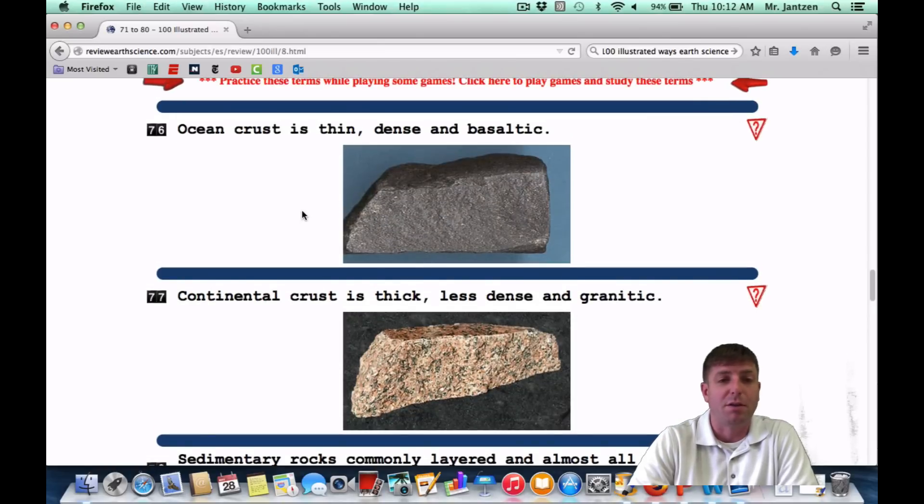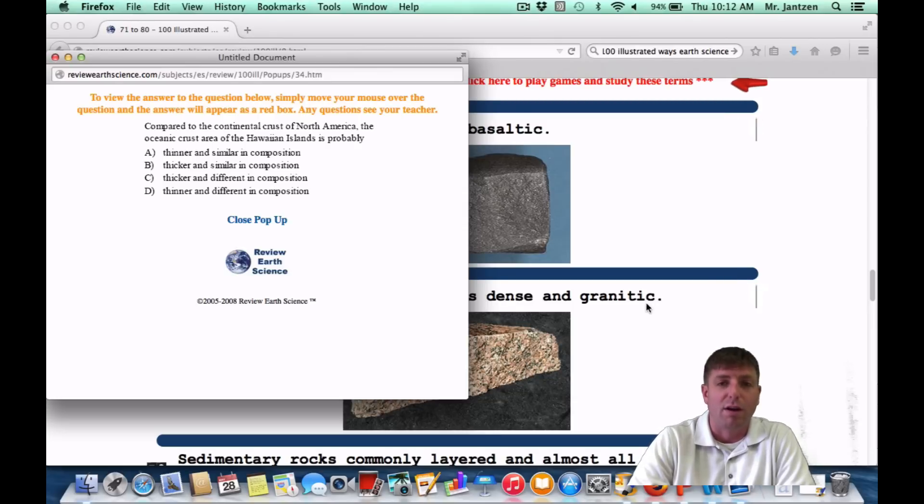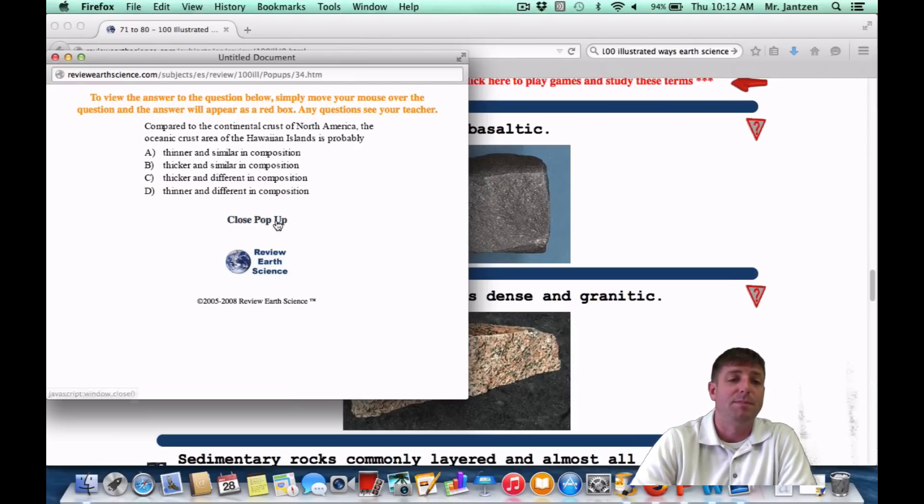Cool, 77, kind of what we were just talking about. Continental crust is thick, less dense, and made of granite. So use the same reference tables whenever you get a crust question. And you don't have to totally memorize this all together. As a Regents question, it's going to appear like this. Compared to the continental crust of North America, the oceanic crust around the area of Hawaii is probably what? So now you're comparing the two. And you're trying to think, oceanic crust is more dense and thinner. Continental crust is thicker and sits up a little higher. But they're talking about the stuff around Hawaii. So they're talking about stuff that's thinner and different in composition, or choice D.